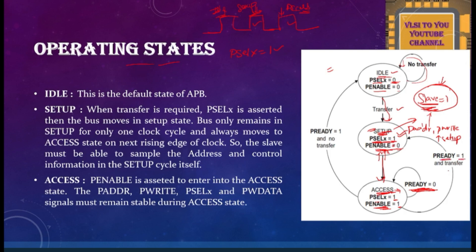When P_SELECT equals 1 and P_ENABLE equals 1, if P_READY is 0 then the transfer will not happen — the bus will be in a wait state, remaining in the access state itself without moving to any other state. If P_SELECT equals 1, P_ENABLE equals 1, and P_READY equals 1, then the transfer takes place — the master is writing something into the slave or reading something from the slave. P_READ and P_WRITE operations occur during this transfer, and this happens only when P_READY equals 1.